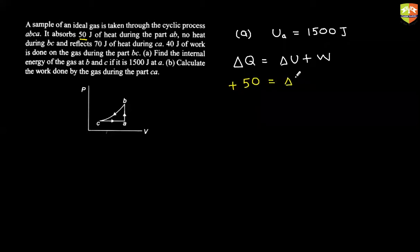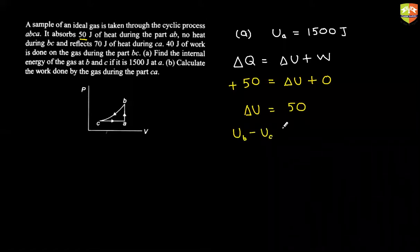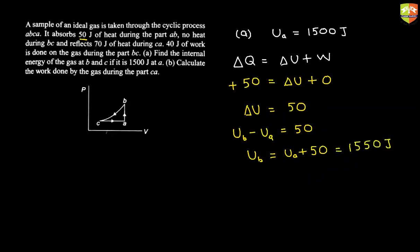This is ΔU and it is an isochoric process. Volume is constant from A to B. So work done is zero. So ΔU should be equal to 50. And ΔU is what? U at B minus U at A. This should be equal to 50. So from here, U at B is equal to U at A plus 50, which is 1550 Joules.